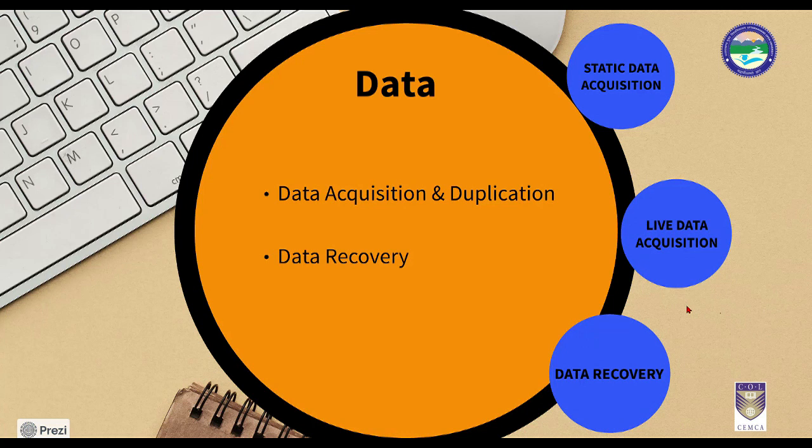For example, if we have access to a suspect's hard drive and would like to store that data so that in the future we don't end up modifying that particular piece of information, we would opt for data duplication methods. In short, data acquisition is the process of collecting data — evidence or crucial information — and data duplication is making copies of that data to protect it from further modifications. Both these methodologies go hand in hand.